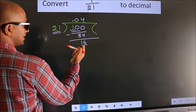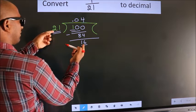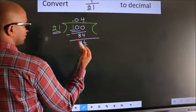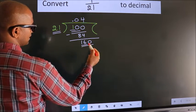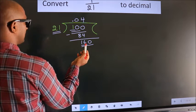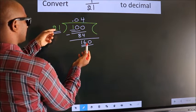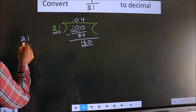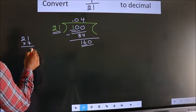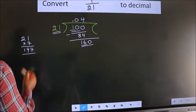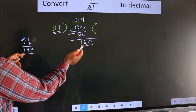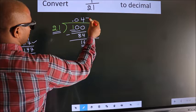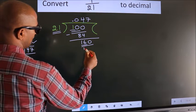Here we have 16, here 21. 16 is smaller than 21, and we already have the decimal, so we can directly take 0 — so 160. A number close to 160 in the 21 table: let us go with 7. So 21 times 7.